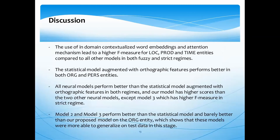To briefly discuss our results: the use of contextualized word embeddings and attention mechanism in our model led to higher F-measure for LOC, PROD, and TIME entities compared to all other models in both fuzzy and strict regimes. The statistical model augmented with orthographic features performs better on ORG and PERSON entities. Our neural models perform better than the statistical model in both regimes, and our model has higher scores than the two other neural models, except the third one.